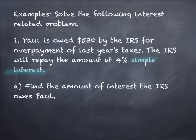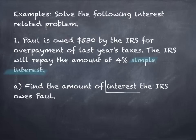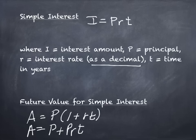Here's the first problem: Paul is owed $530 by the IRS for overpayment of last year's taxes. The IRS will repay the amount at 4% simple interest. We need to figure out how much the IRS actually owes Paul. Part A asks for the amount of interest — and that tells you which formula to use.